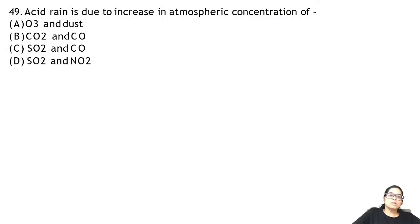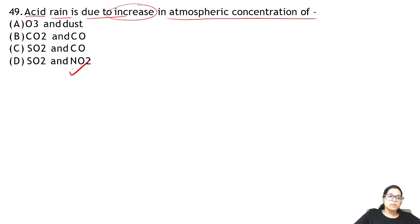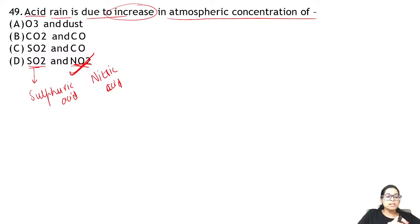Question 49: acid rain is due to an increase in atmospheric concentration of SO₂ and NO₂. These go into the atmosphere, form sulfuric acid and nitric acid, mix into rain, and the pH of rain decreases — causing acid rain. So the answer for 49 is D.